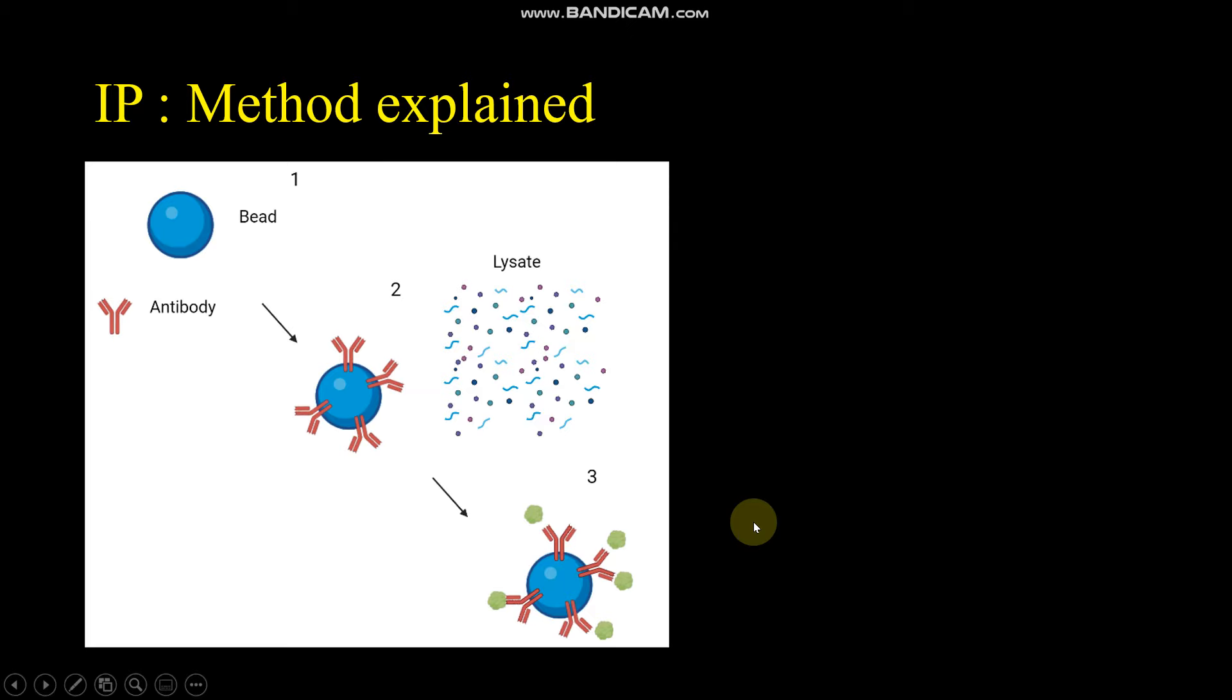In the classic immunoprecipitation, the goal is to isolate a protein of interest from a mixture containing many different proteins. Imagine we want to take out the green proteins. So we start by designing an antibody to target this green protein.